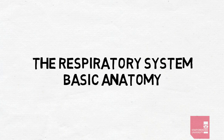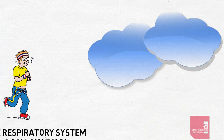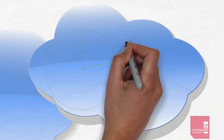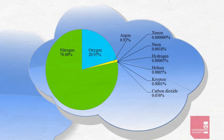The respiratory system exists to facilitate the exchange of gases between the atmospheric air and the cells of our bodies. Atmospheric air consists predominantly of nitrogen, with approximately 21% being oxygen.